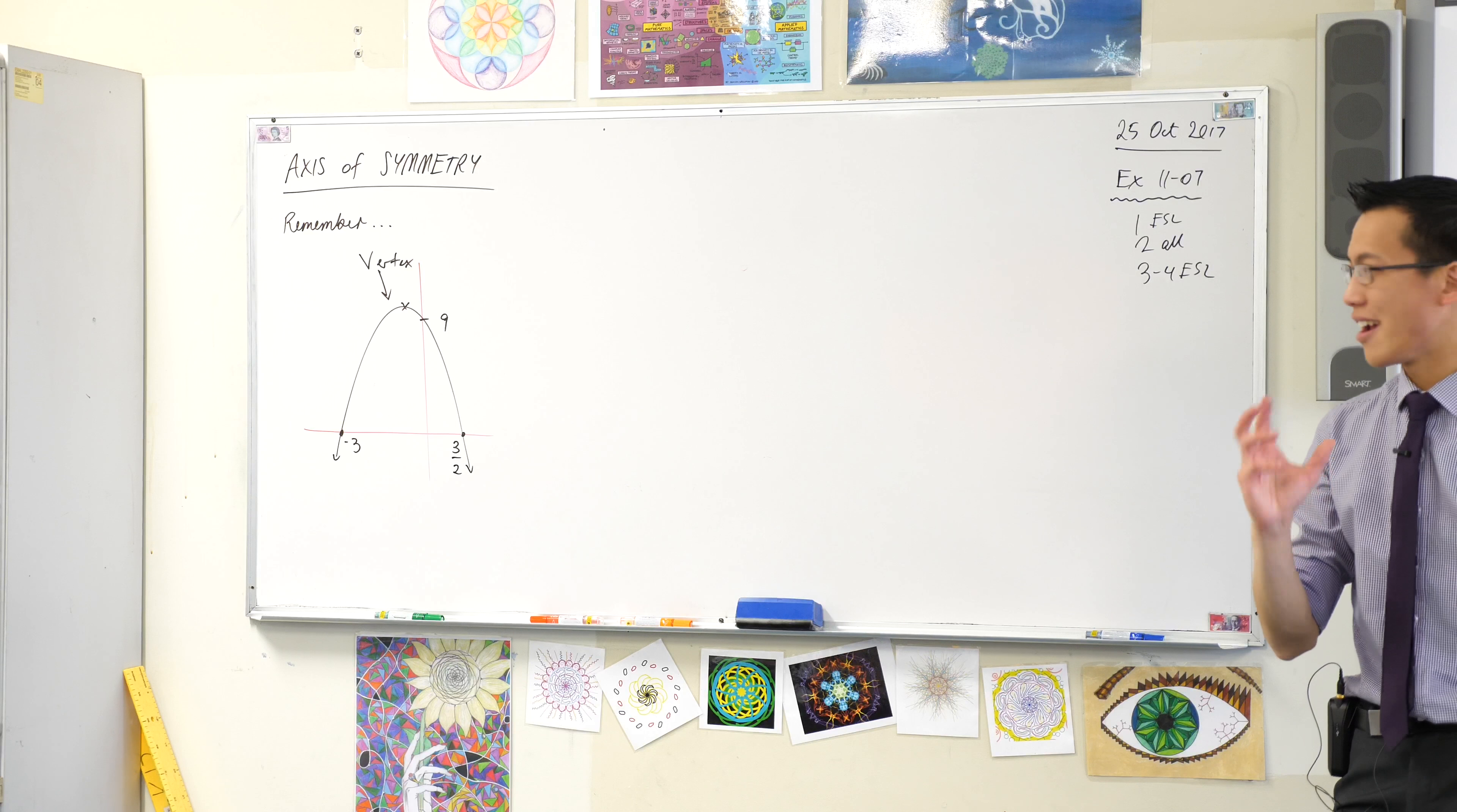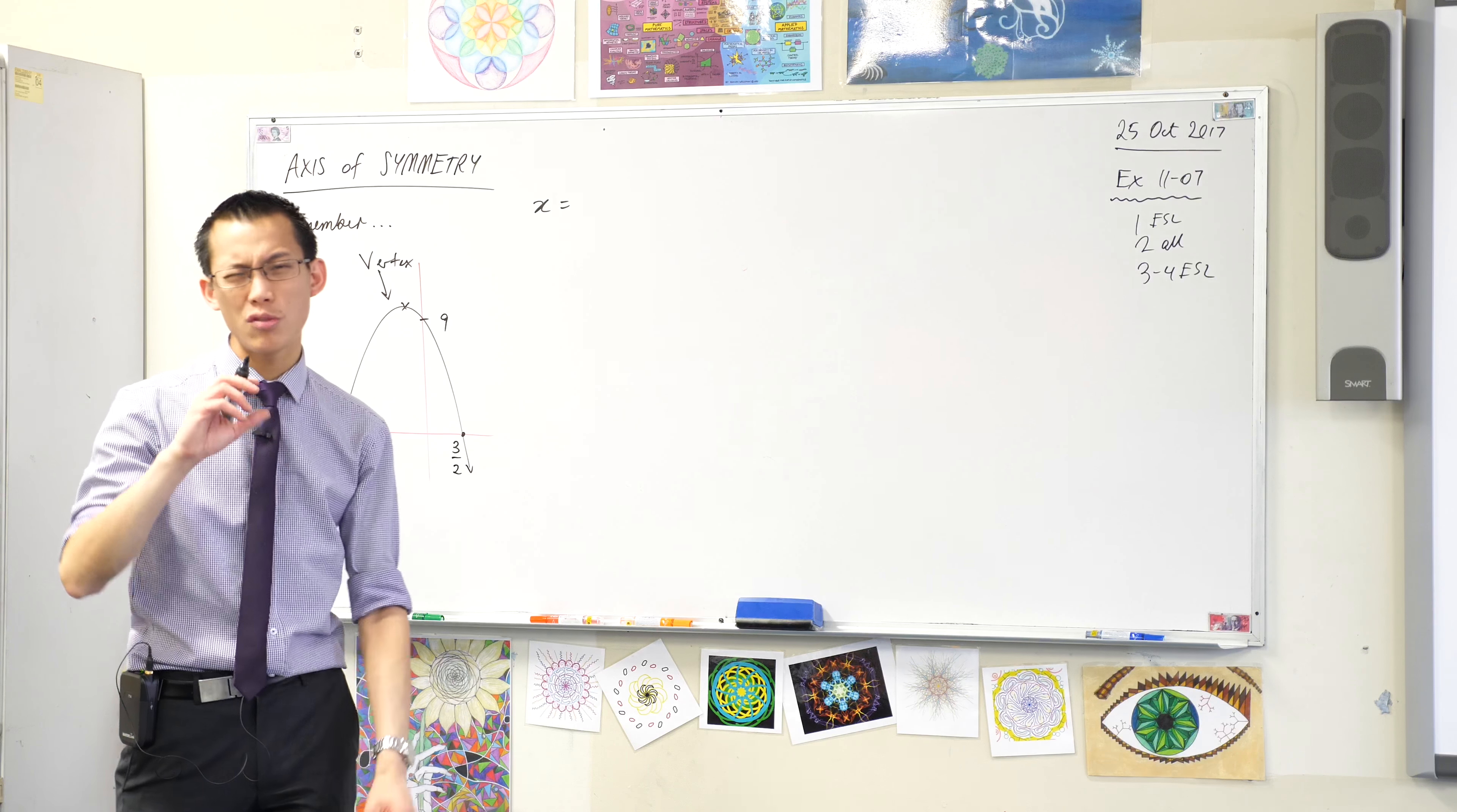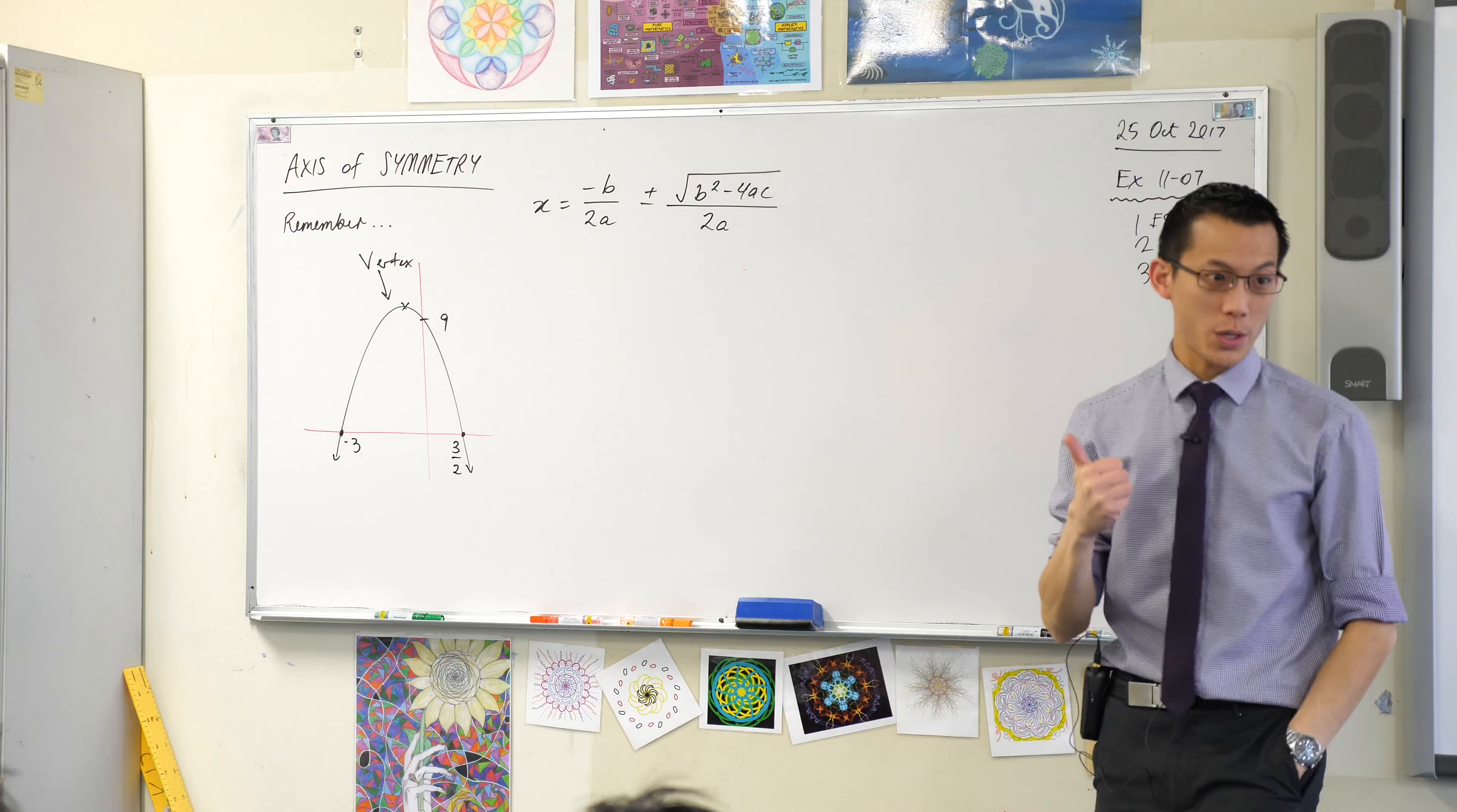Now, what we didn't do yesterday was have a careful look at what if you don't want to do it just roughly? What if you actually want to precisely know? What I'm going to do is call you back to the quadratic formula, which we wrote five minutes ago. But please note this: I want you to write it a slightly different way to normal. Please write it like this.